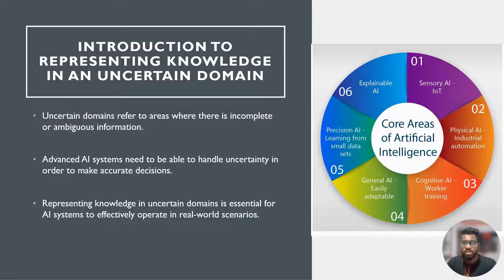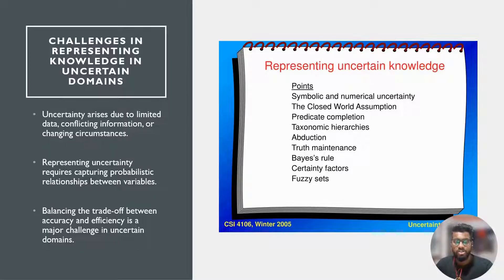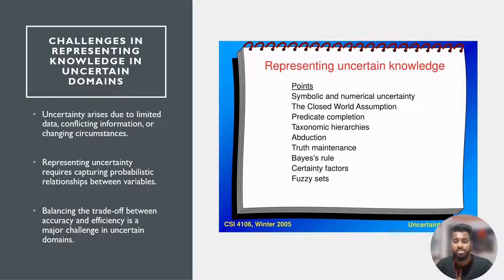Some of the core areas of AI include sensory AI, IoT, physical AI, industrial automation, cognitive AI, worker training, general AI that is easily adaptable, precision AI learning from small datasets, and explainable AI. The challenges in representing knowledge under uncertainty arise due to limited data, conflicting information, or changing circumstances. Representing uncertainty requires capturing probabilistic relationships between values, and balancing the trade-off between accuracy and efficiency is a major challenge.